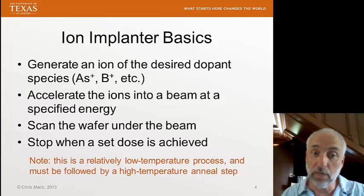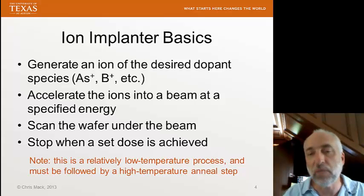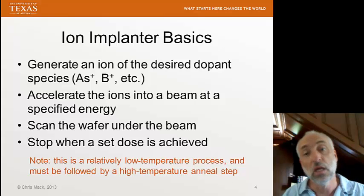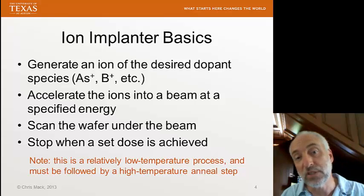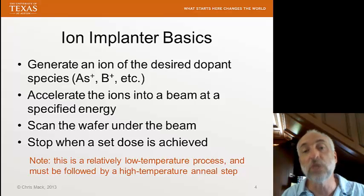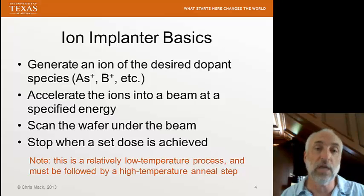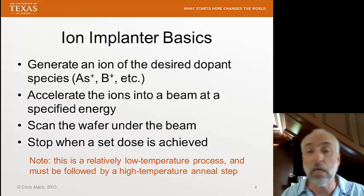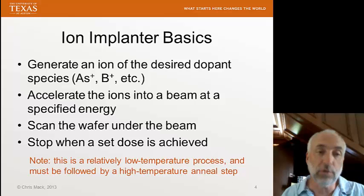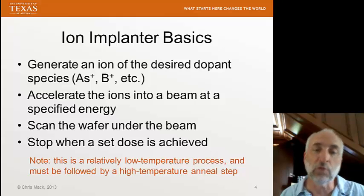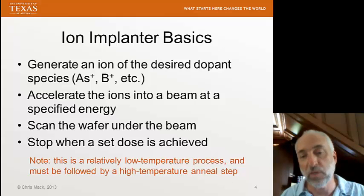It's important to note that this is a relatively low temperature process. Sometimes wafers can heat up while being implanted, but basically this is a low temperature process. This means that when the ions disrupt the crystal structure of the silicon wafer, we create an amorphous silicon in the region where the implant dose is high enough. That amorphous material will stay amorphous throughout ion implantation. We have to separately anneal — put it in a furnace, bring it up to a very high temperature, and regrow the crystal in the region where it has been damaged by ion implantation.